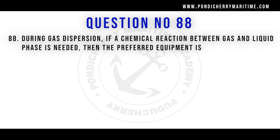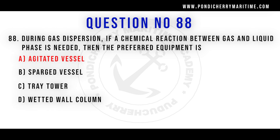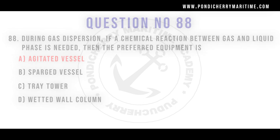Question 88: During gas dispersion, if a chemical reaction between gas and liquid phase is needed, what is the preferred equipment? Option A: agitated vessel. Option B: sparged vessel. Option C: tray tower. Option D: wetted wall column. Correct answer is Option A: agitated vessel.